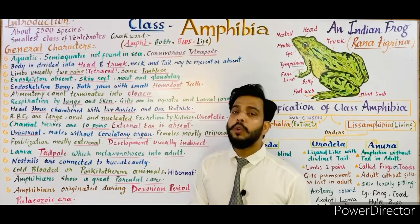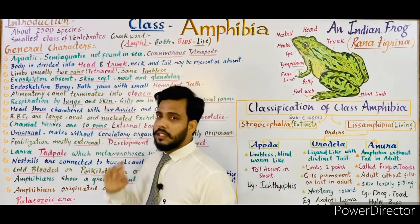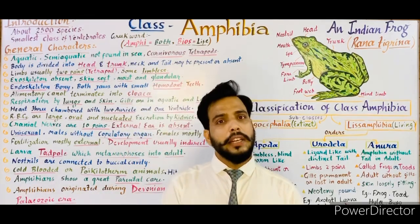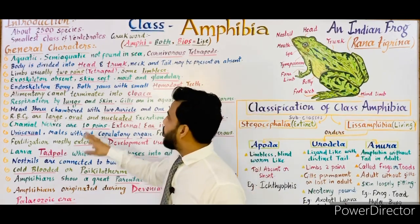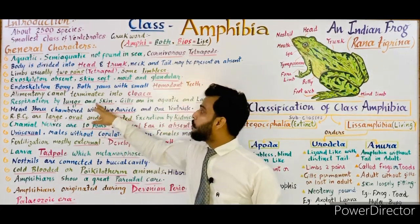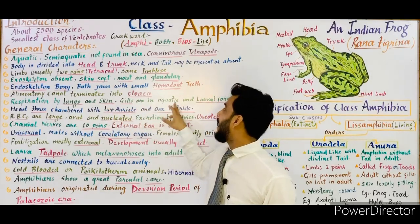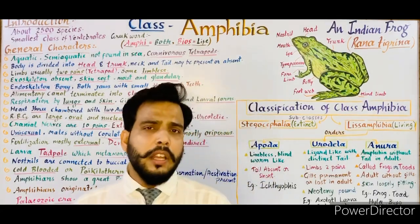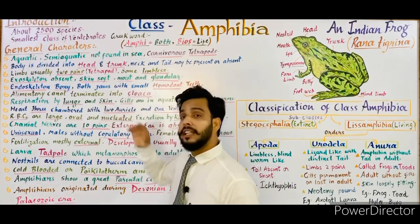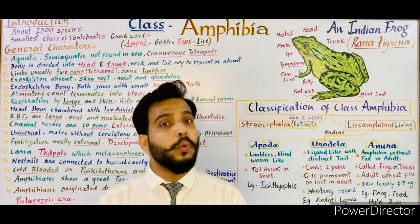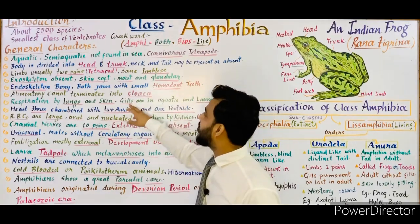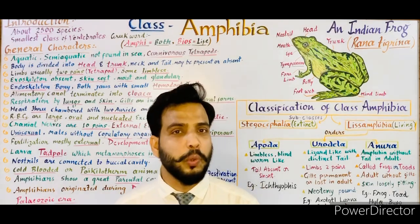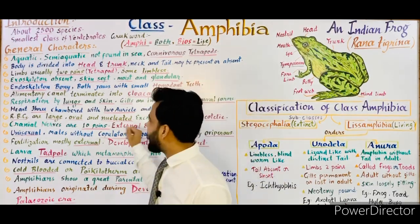Respiration occurs by lungs and skin. When amphibians are on land they respire through the lungs; when in water they respire through the skin. In the larval and aquatic form, gills may be present. In larval forms, respiration through gills is common. When respiration occurs through the skin, it is also known as cutaneous respiration.